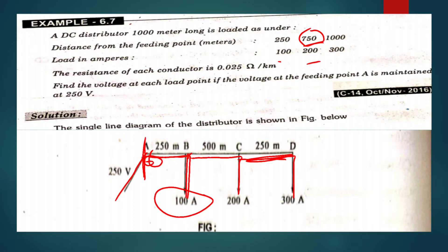The resistance of each conductor is 0.05 ohms per kilometer, so the resistance value R is 0.025 ohms. Find the voltage at each load point if the voltage at the feeding point A is maintained at 250 volts. The supply is 250 volts and the loads are 100 amps, 200 amps, and 300 amps.